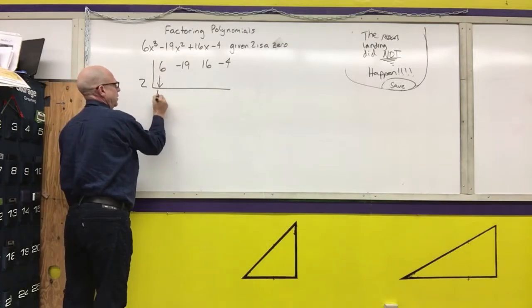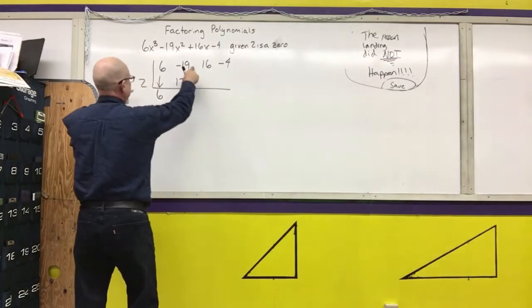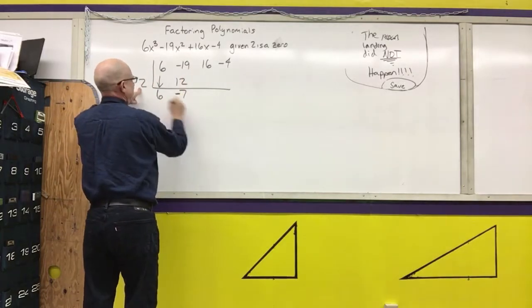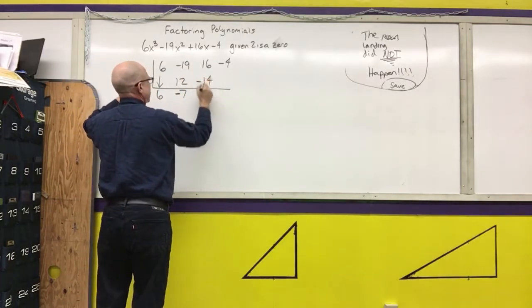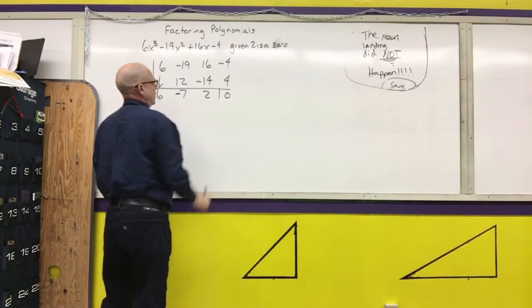Copy. Multiply. Add. It's negative 7. Multiply. Negative 14. Add 2. Multiply. 4. Add 0.